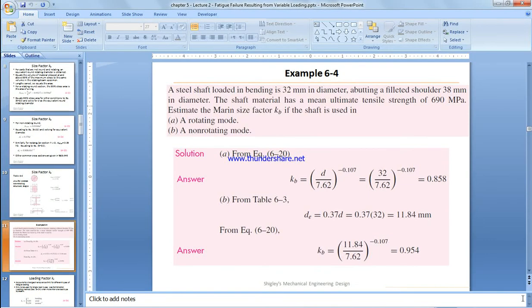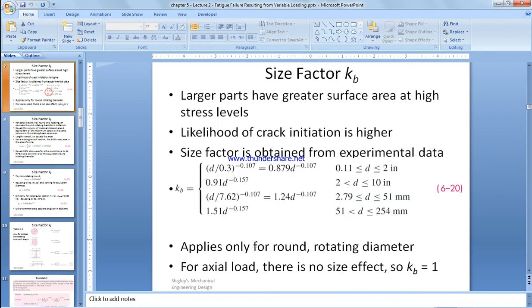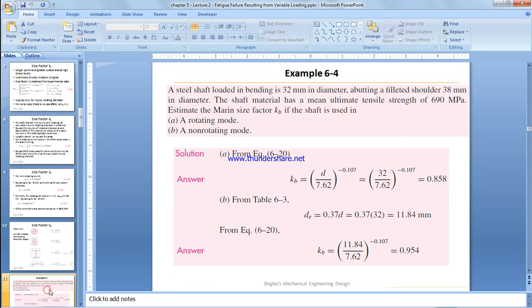The second modifying factor for the endurance limit is size factor. To start with, if you're applying axial load, there is no size effect and we take it directly kb equal 1. So let's start with the example and see how it goes.